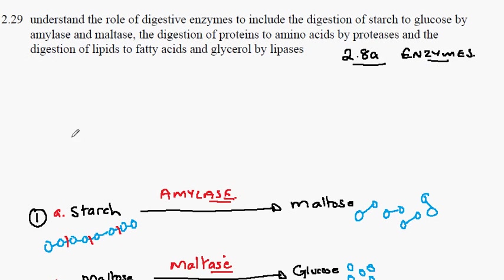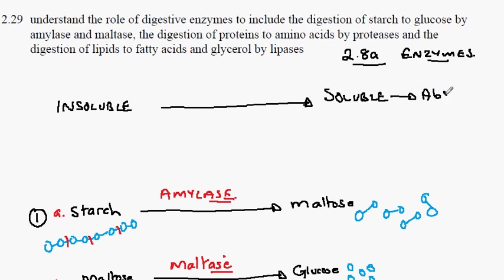The overall principle that we're about to see is that digestive enzymes turn the insoluble food which we ingest into soluble molecules which can then be absorbed into the bloodstream. This latter process occurs in the small intestine.